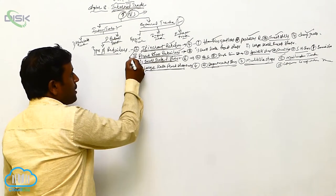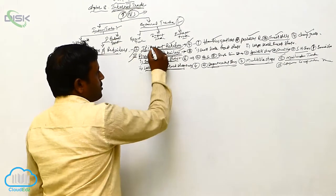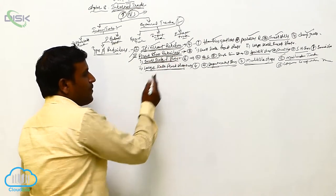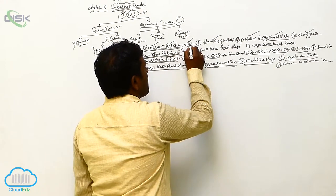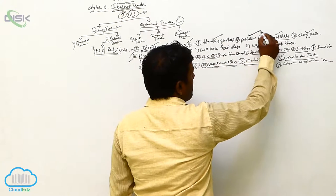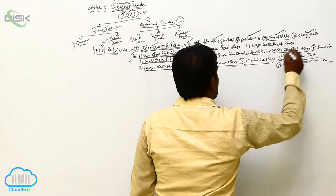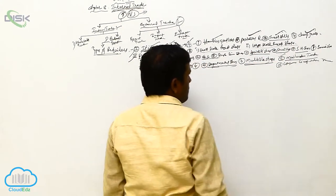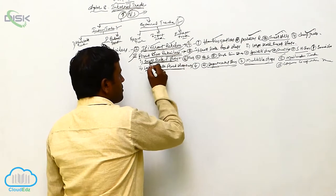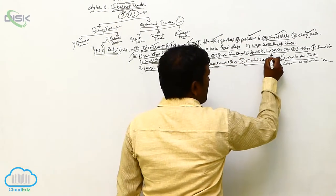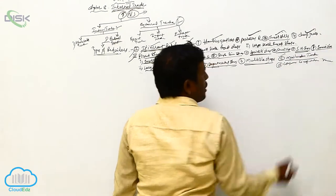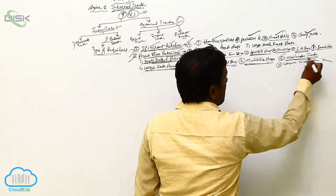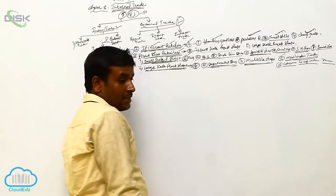The types of retailers are initially two: itinerant retailers and fixed shop retailers. Itinerant retailers have no fixed place and are divided into four types: hawkers and peddlers, periodical retailers, street stalls, and cheap jacks. Fixed shop retailers have two types: small-scale fixed shops (divided into six: general stores, single-hand stores, specialty shops, street shops, second-hand shops, and second shops) and large-scale fixed shops (four types: departmental stores, multiple shops, mail order trade, and consumers cooperative stores).